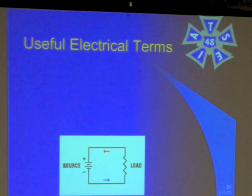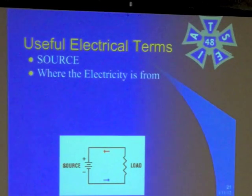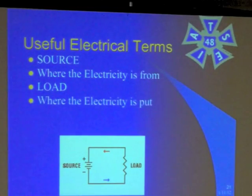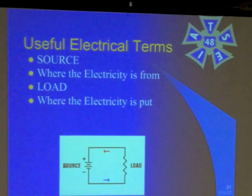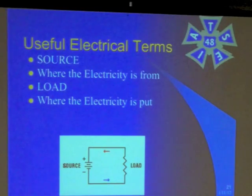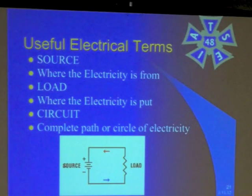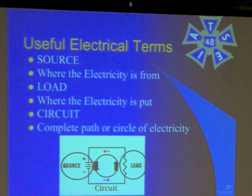Now we'll get into a couple of useful electrical terms. The first one is source — this is where the electricity comes from. Then you have the load — that's where the electricity is put. You're taking the source and putting it across the load. The load is a resistance; if it's high, it pushes back on the source. If the resistance is low, it lets more electricity through. A circuit is the complete path or circle of electricity.